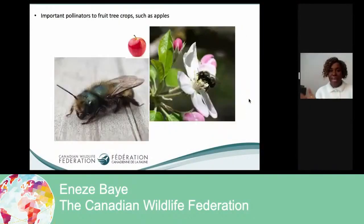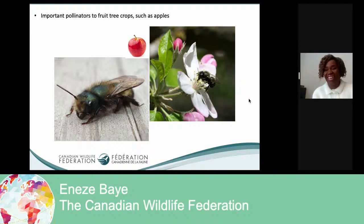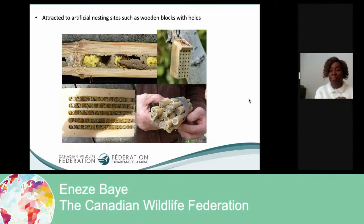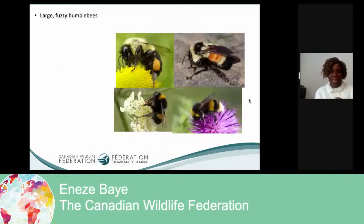The next bee is the mason bee. The mason bee is actually very important for pollinating our apples. So if you love apples, say a big thank you to the mason bee! Mason bees like to nest in holes and wooden blocks. If you have bees around your schools, you might find mason bees nesting in some artificial nesting materials.